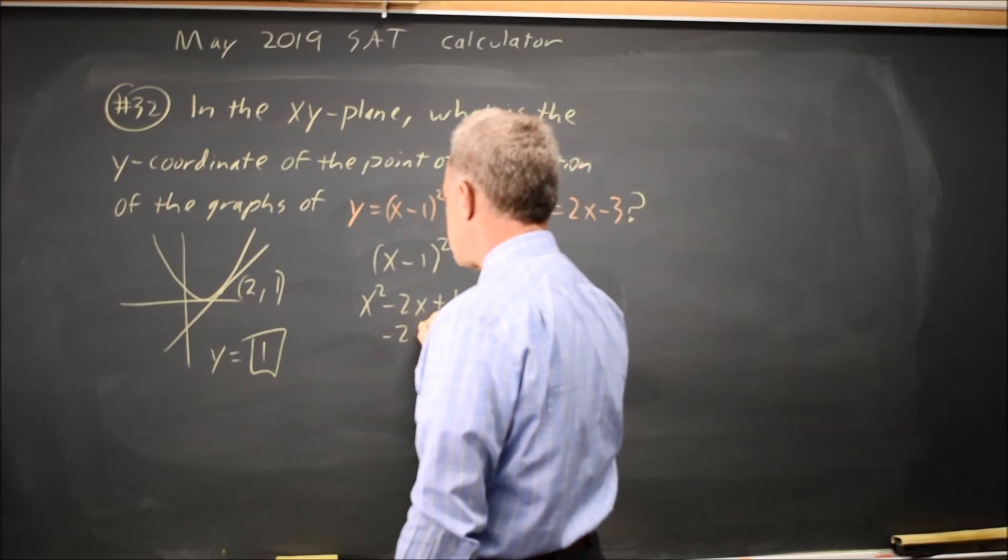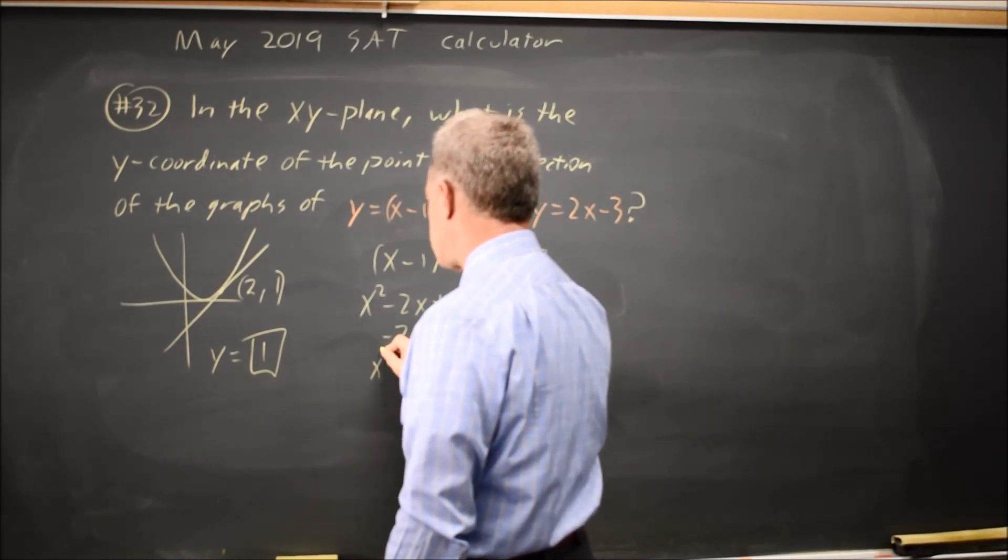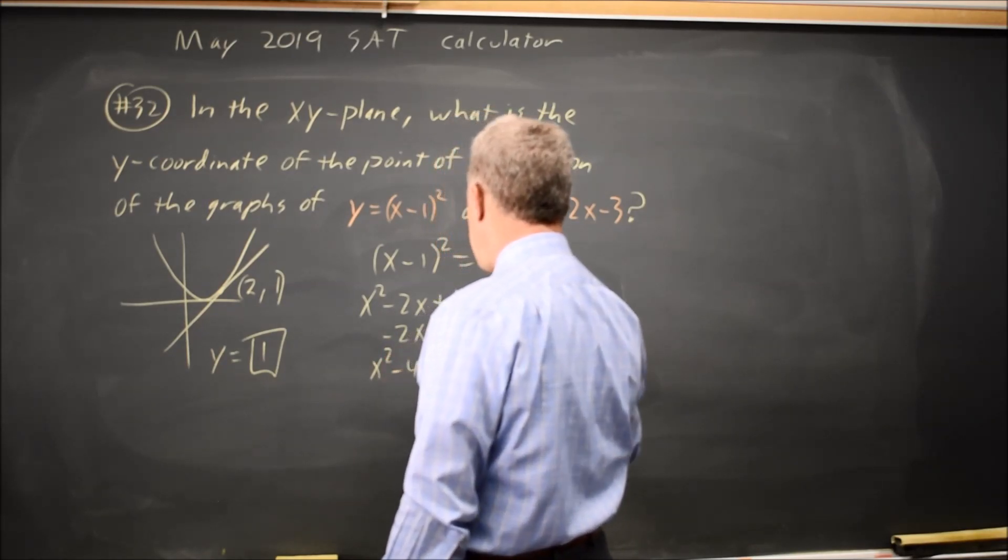If I subtract 2x from both sides and add 3 to both sides, I get x squared minus 4x plus 4 equals 0.